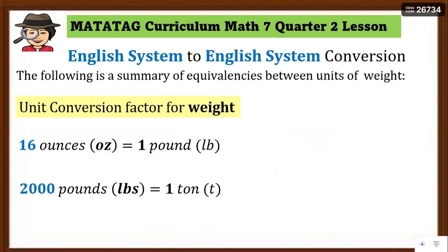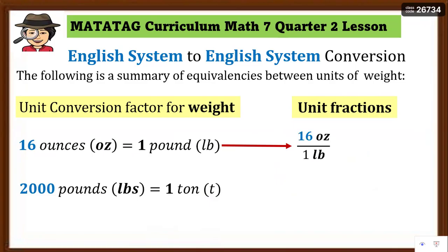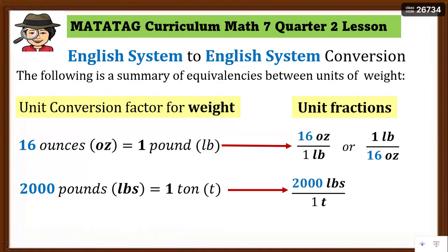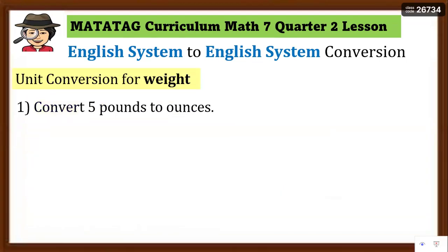From the conversion factors, we create unit fractions. Unit fractions are used when we convert from one unit to another. We can write 16 ounces over 1 pound, or flip it: 1 pound over 16 ounces — depending on the unit required. Similarly, we have 2,000 pounds over 1 ton, or 1 ton over 2,000 pounds. These are the unit fractions needed to convert weight in the English system.